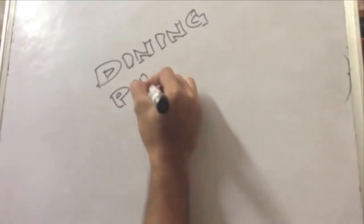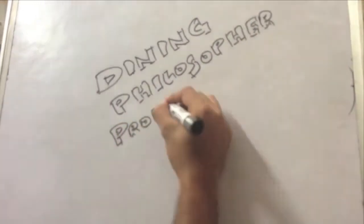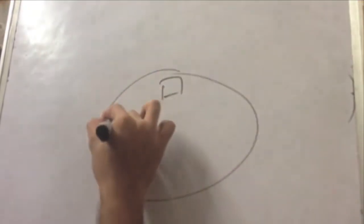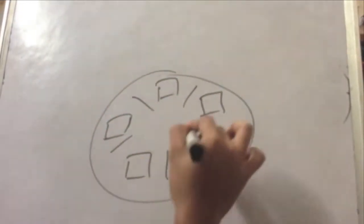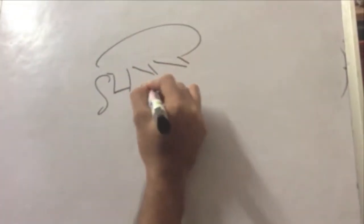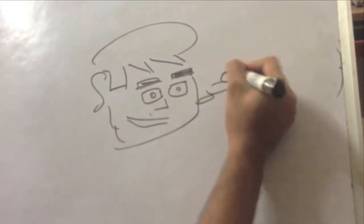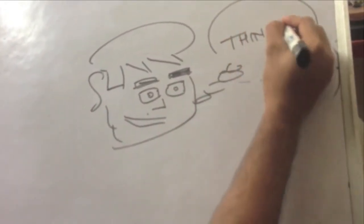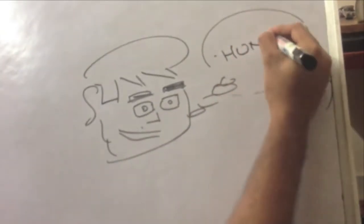In this video we are going to discuss the dining philosopher problem. Initially we have a table with a set of five plates and a fork lying next to each plate. We also have five philosophers whose only work is to keep thinking, feel hungry, and eat.